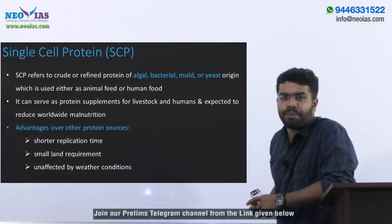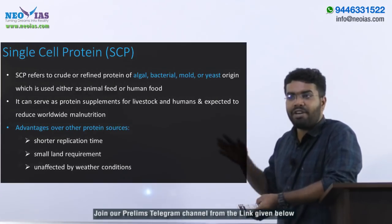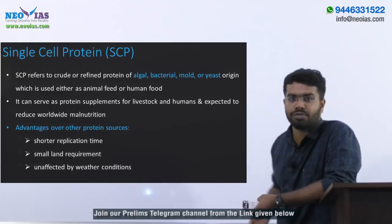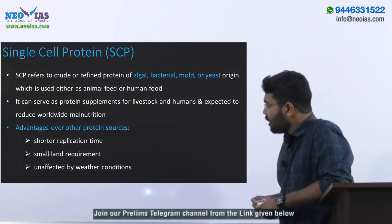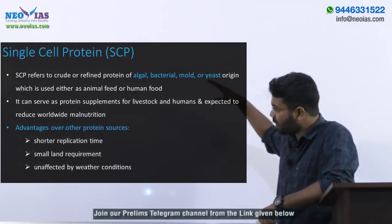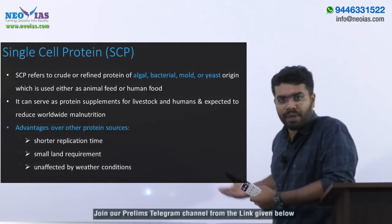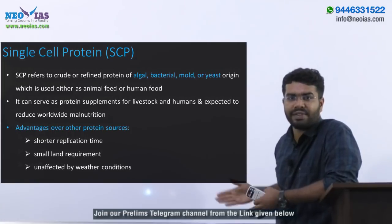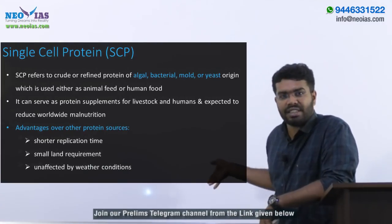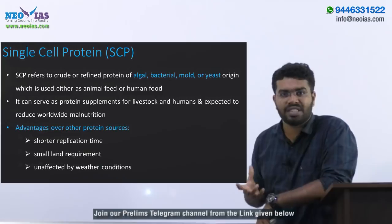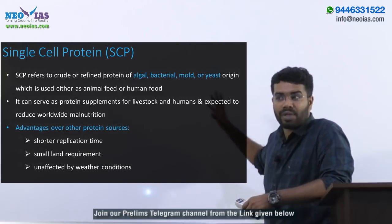Advantages of single cell protein over other protein sources: we have leguminous plants and pulses as major protein sources, and meat, milk, and soybean as non-vegetarian sources. Single cell protein requires only a shorter replication time, a very small land requirement — algae can even be cultivated in a tank — and it is unaffected by weather conditions. This makes it inexpensive and easy to cultivate.